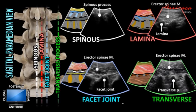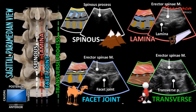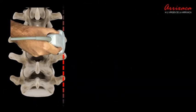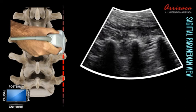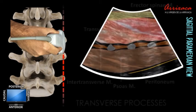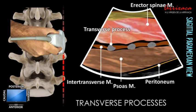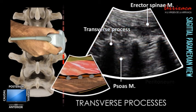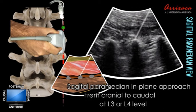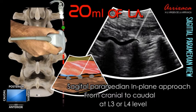The understanding of lumbar spine anatomy is essential to perform this procedure. The identification of the lumbar transverse processes in a paramedian sagittal plane is critical to perform the block. The transverse processes are identified as finger-like acoustic shadows separated by the striated psoas major muscle. The erector spinal muscle lies superficial to the transverse processes. The needle is inserted in-plane and directed cephalic to caudal, one or two spaces above the surgical target.